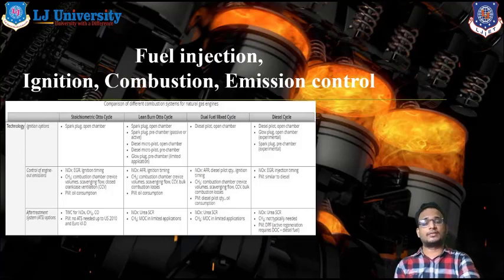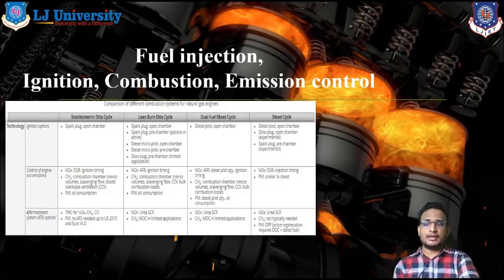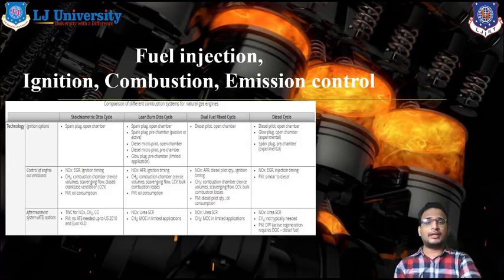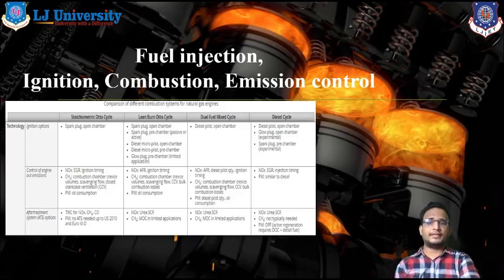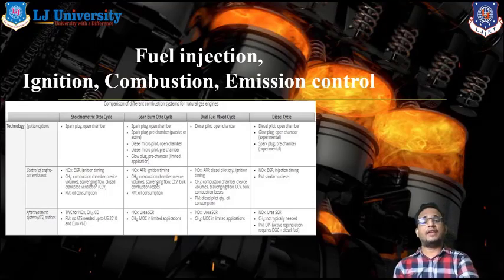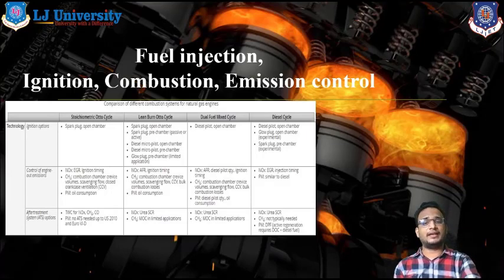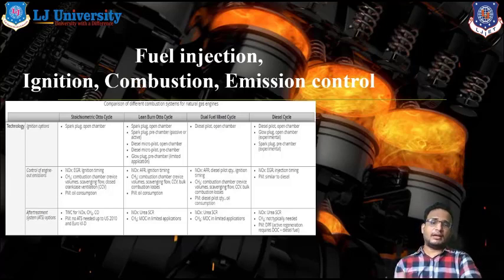In terms of ignition systems, almost all the parameters are used in lean-burn auto-cycles as well as diesel cycles. Now, Control of Engine Emissions is the second option. We are going to compare these four cycles so you can easily understand. In Stoichiometric Auto-cycle, Lean-burn Auto-cycle, Dual Fuel Mixed Cycles, and Diesel Cycle, we are using mostly NOx control via AFR — Air Fuel Ratio — and EGR, which means Exhaust Gas Recirculation systems. We are also using Crankcase Ventilation Systems, and in some diesel engines we use diesel pilot quantity and oil consumption control to manage particulate matter.